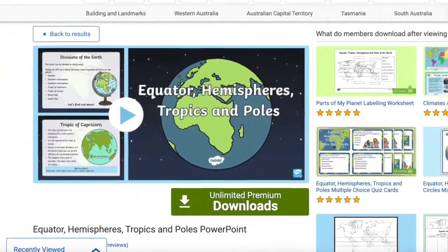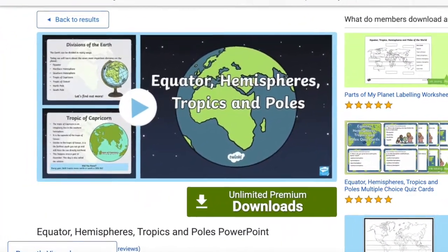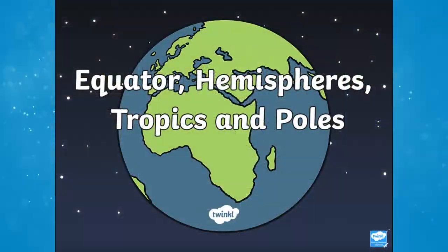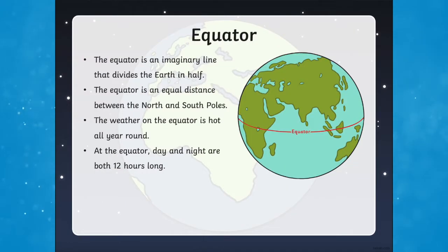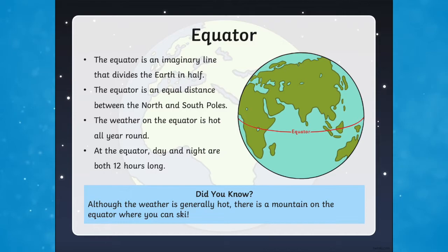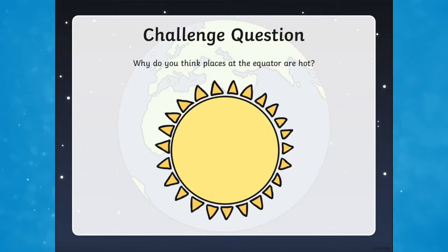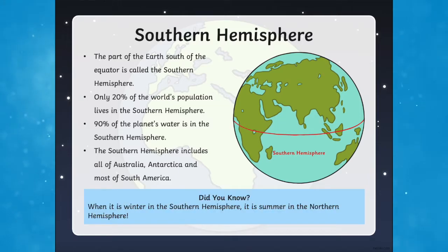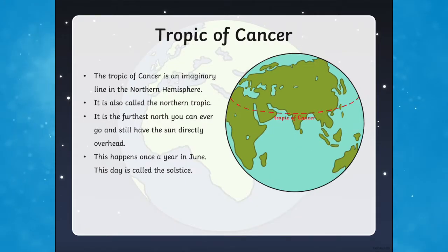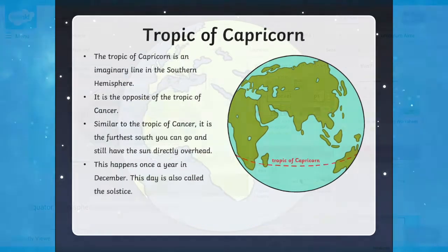The Equator, Hemisphere, Tropics and Poles PowerPoint is a fantastic PowerPoint. It's a great way to teach your children about divisions of the globe. Each slide features accurate information on the northern and southern hemispheres, the equator, and the tropics of Cancer and Capricorn. The PowerPoint would also be great to use as an introduction to this topic.